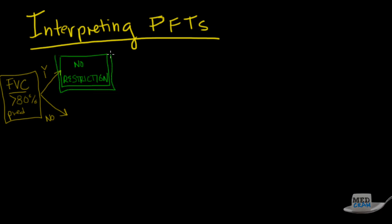That's our first diagnosis we can come up with right off the bat. If, however, the FVC is less than 80% of predicted, or the answer is no, then we can say that we either have restriction or obstruction with air trapping. It's one or the other.